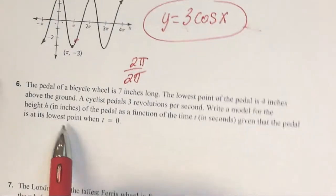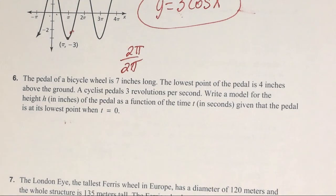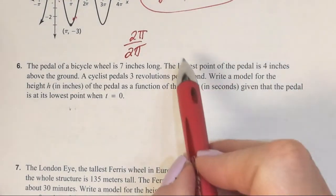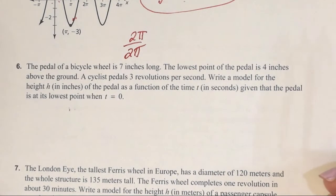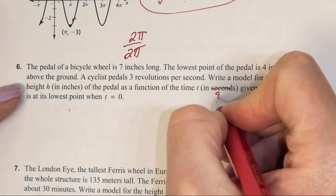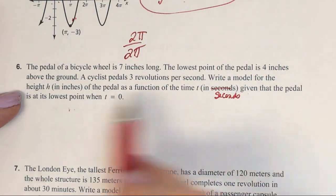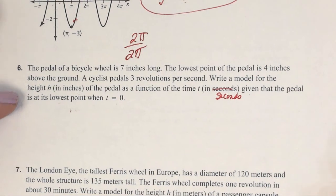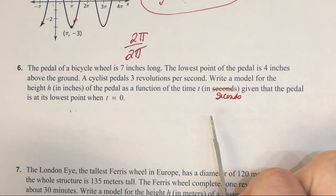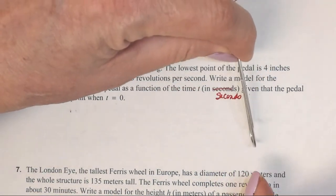Let's do number 6 together. The pedal on a bike wheel is 7 inches long. The lowest point of the pedal is 4 inches above the ground. A cyclist pedals 3 revolutions per second. Write a model for the height in inches of the pedal as a function of time in seconds, given that the pedal is at its lowest point when t = 0.